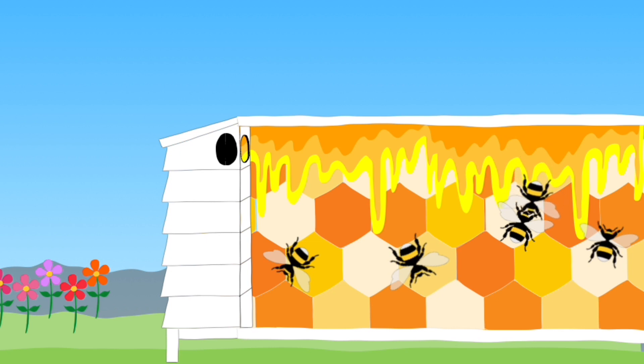Then the contents are emptied into one of the empty cells in the hive. Bees then guard the cell and flap their wings to dry out the honey.